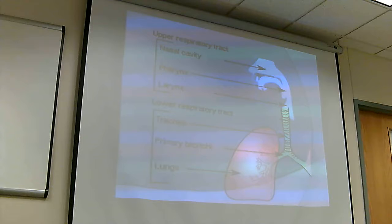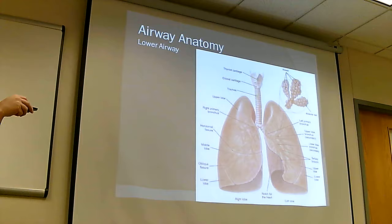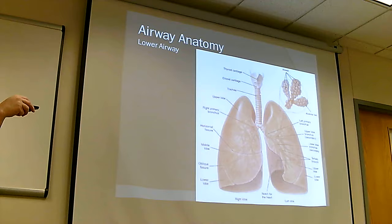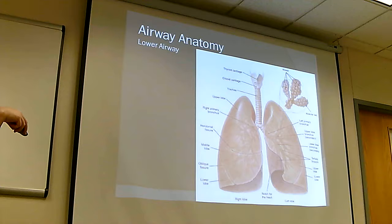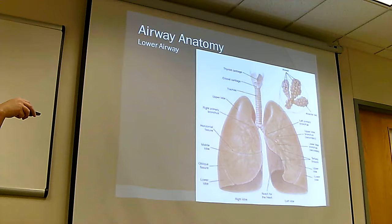Once you get through the larynx and past the vocal cords down into the trachea, that defines the lower airway. Below the vocal cords you feel the tracheal rings going down to the carina, where the trachea splits into the right and left main bronchus. The rings in the trachea are cartilaginous; once you hit the bronchus, those rings are smooth muscle — which is the site of bronchospasm. When lungs are irritated, those muscles clamp down and close off the airway, which is also where asthma occurs.